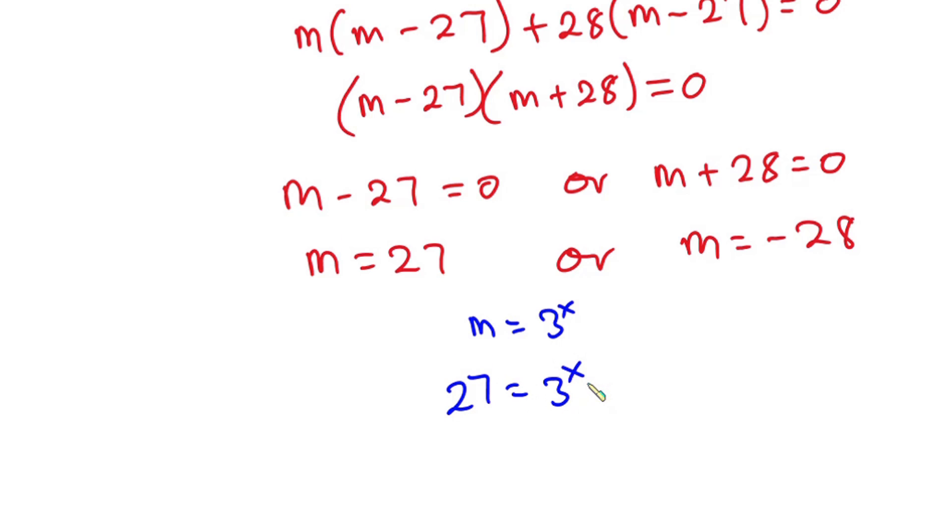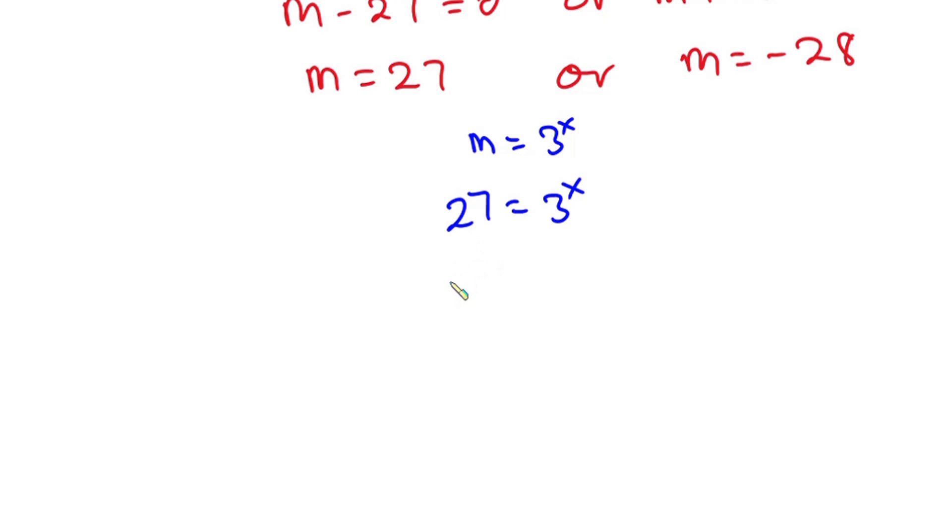So when m is equal to 27, we have 27 is equal to 3 to the power x. And this 27 could be written as 3 to the third power, and this is equal to 3 to the power x. Now you can see the bases are the same, so we can simply equate the exponents. This implies that x is equal to 3.